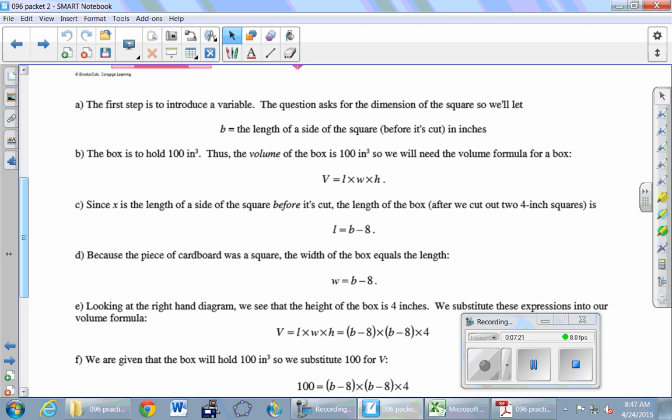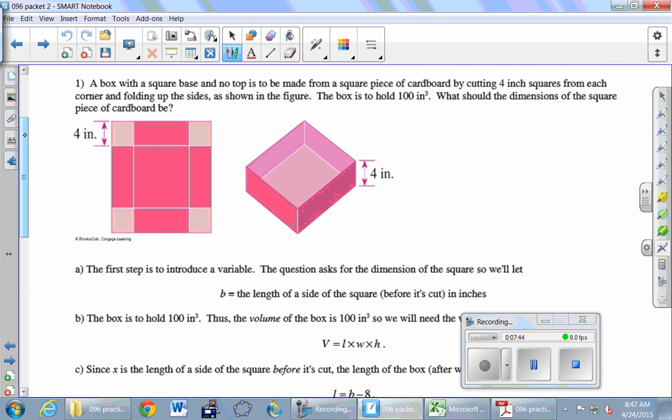When we say that the box is supposed to hold 100 cubic inches, what geometrical word are we talking about? Volume, right? Holding 100 cubic inches is volume. And what's the formula for the volume of a box? Length times width times height. Yeah? Okay. So we've got that formula here. Volume of the box is length times width times height. And we just have to identify what those different characteristics are.